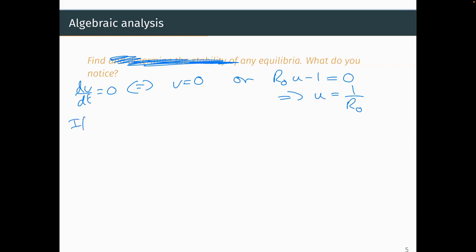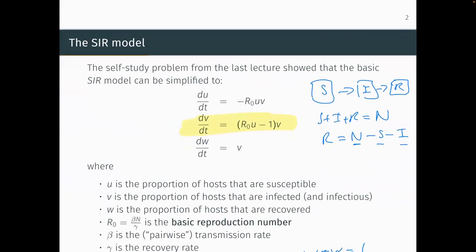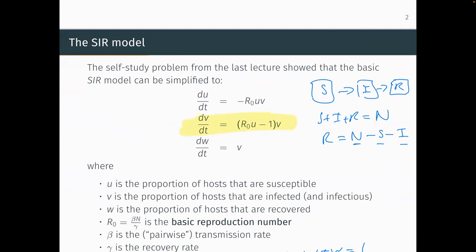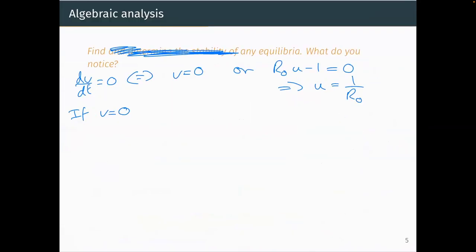If v = 0 — no infected individuals — then du/dt is also zero, regardless of what value u takes. Whether u is one-half, one-quarter, one-third — it doesn't matter. If v = 0, both equations equal zero for all values of u.